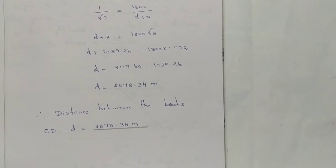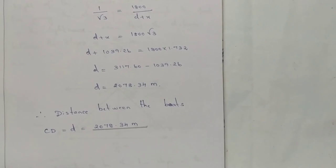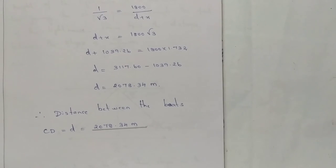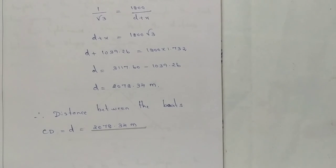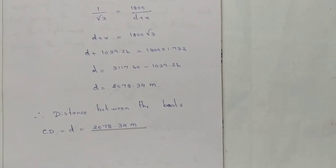So for all angle of depression problems, use a right angle triangle. Find the first right angle triangle value, then substitute into the second right angle triangle to get the final answer. Please like, share, comment, subscribe, and press the bell button. Thank you.